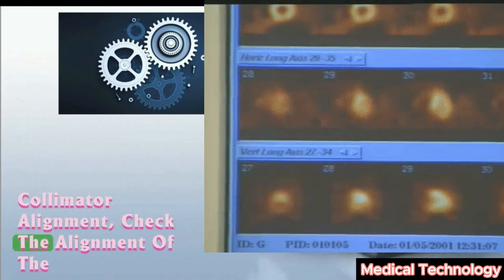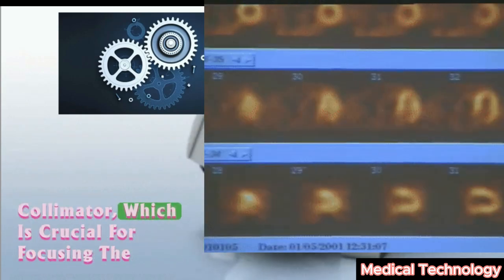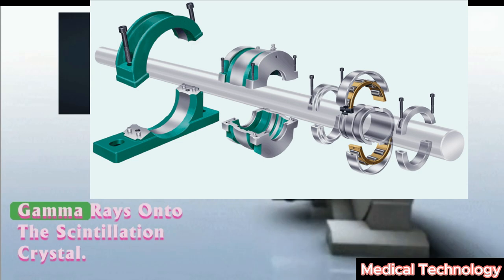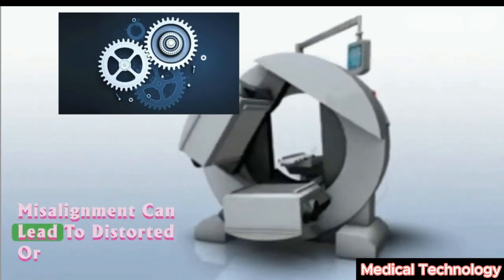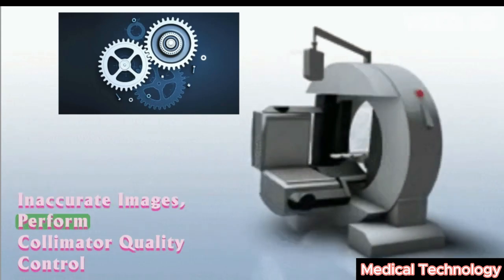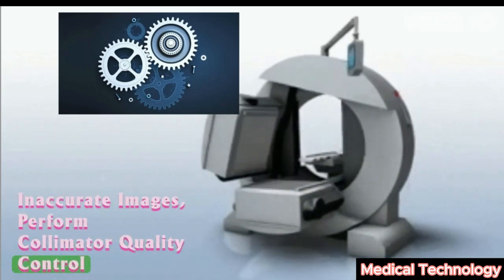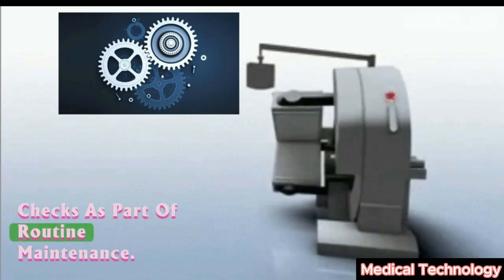Collimator alignment: Check the alignment of the collimator, which is crucial for focusing the gamma rays onto the scintillation crystal. Misalignment can lead to distorted or inaccurate images. Perform collimator quality control checks as part of routine maintenance.